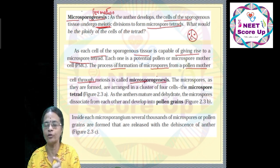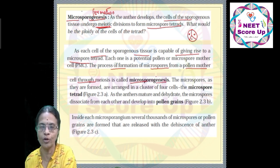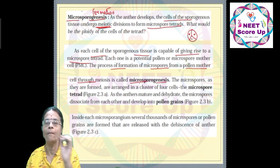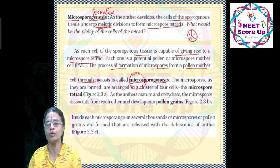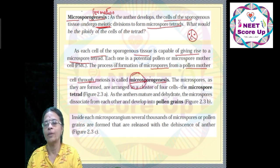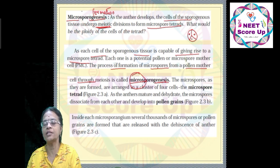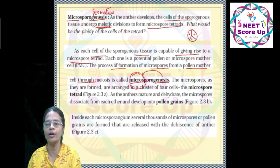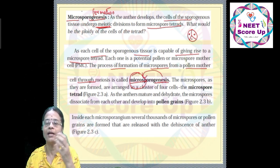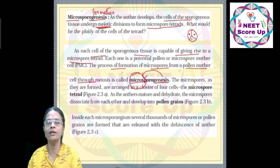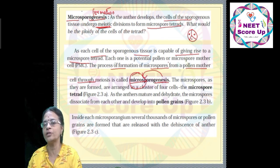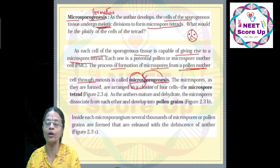The process of formation of microspores from the pollen mother cell through meiosis is called microsporogenesis. Breaking down the word: 'micro' means microspore, and 'genesis' means formation. So formation of microspores is called microsporogenesis. It is the process of formation of microspores from the pollen mother cell.